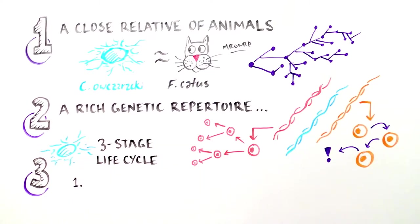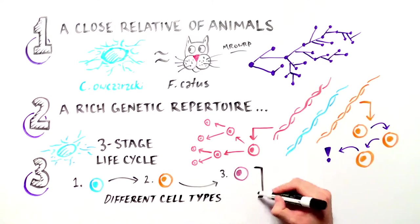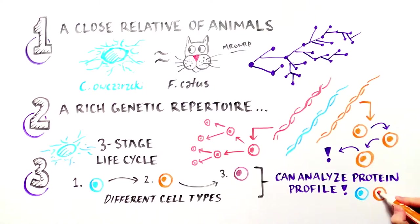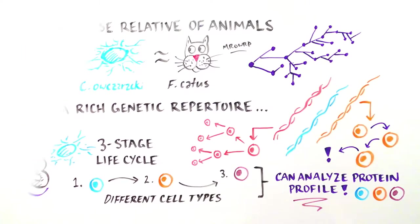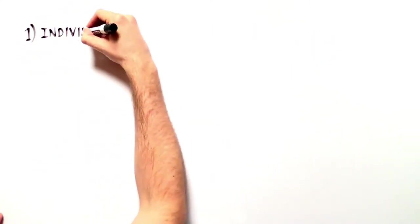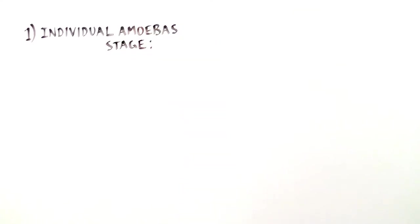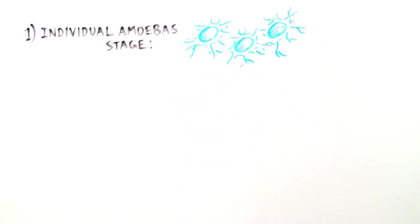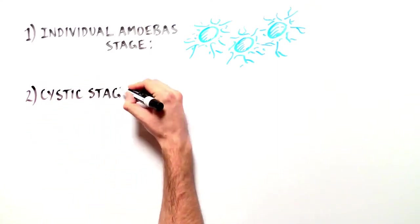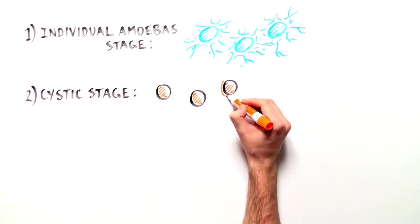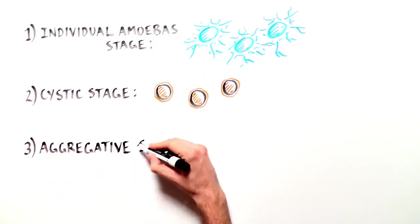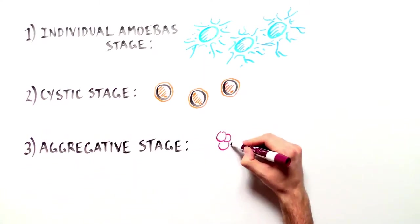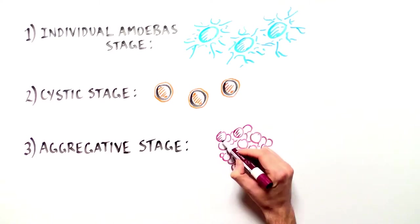This allowed the researchers to analyze protein activity across three different cell types. One stage consists of individual amoebas with cell protrusions known as filopodia, used to attach to the substrate. This can be followed by a cystic stage without cell protrusions, or by an aggregative stage, in which the amoebas gather together and form a multicellular structure.